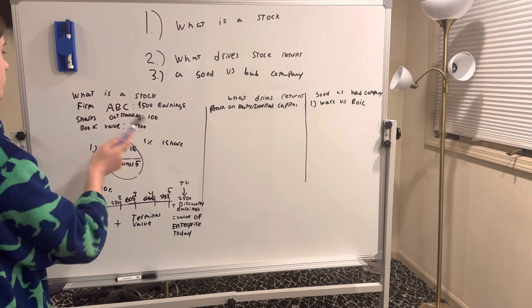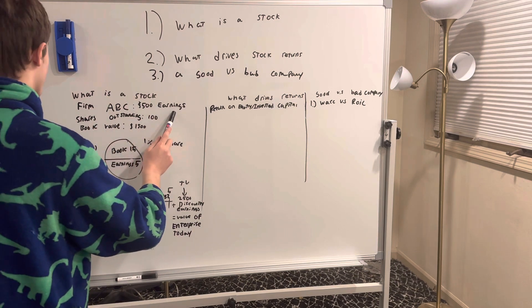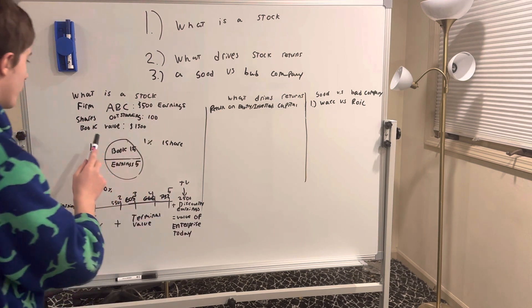So what is a stock? Firm ABC, for example, has $500 a year in earnings, shares outstanding of 100, book value of $1,500.